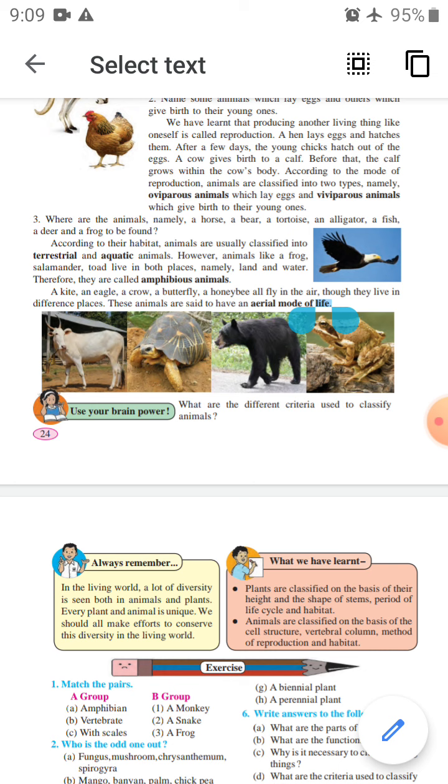Always remember that in the living world, a lot of diversity is seen both in the animals and plants. Every plant and animal is unique, and we should all make efforts to conserve this diversity in the living world. This is most important.